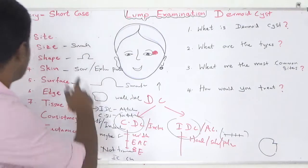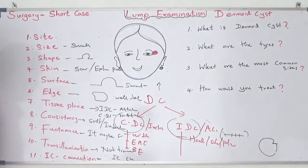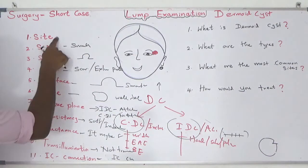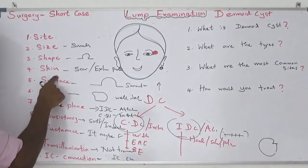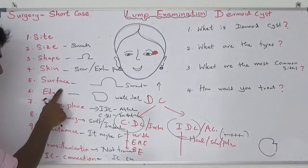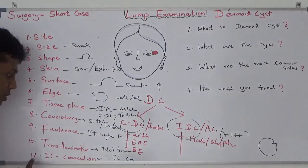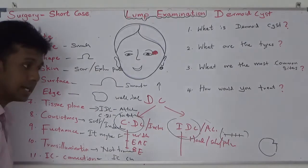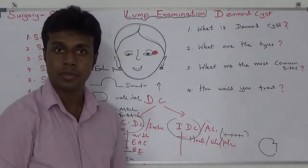This is how you examine a dermoid cyst. The parameters are: site, size, shape, skin attachment, surface, edges, tissue plane, consistency, fluctuation, transillumination, and intracranial connection.